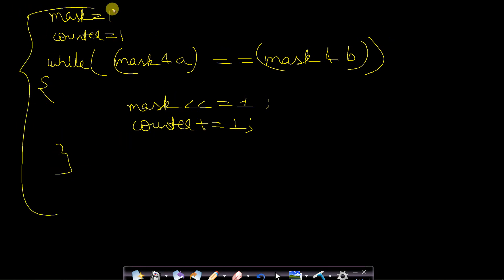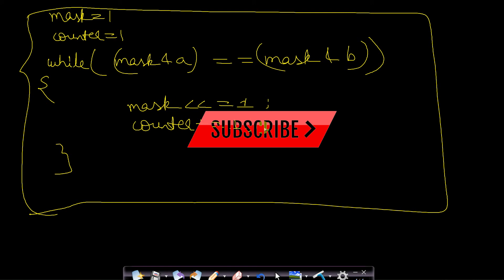So this is the entire algorithm. This is a very simple algorithm to solve the given question of finding the rightmost different bit between two numbers efficiently. So I hope you are able to understand this video.